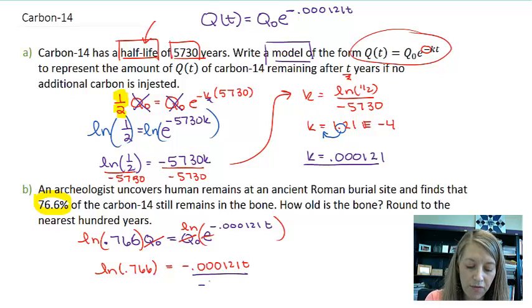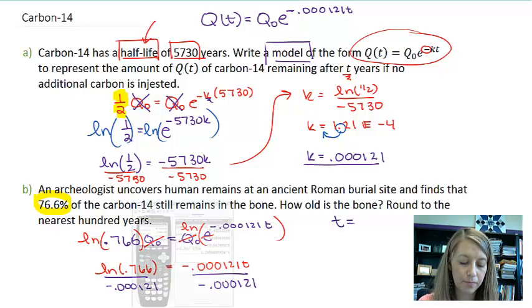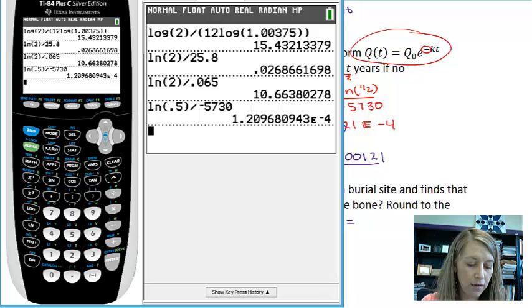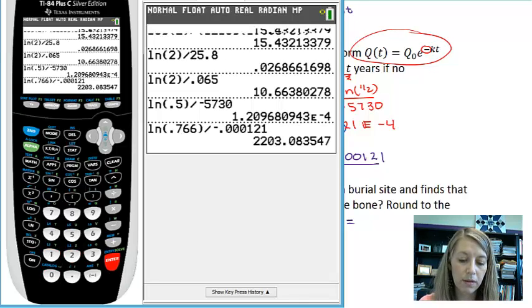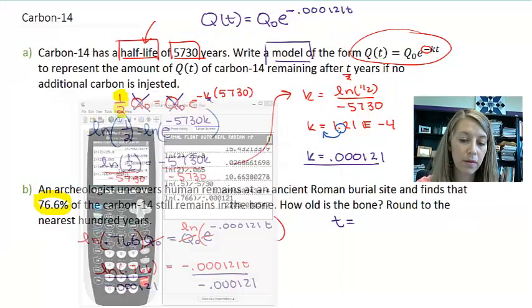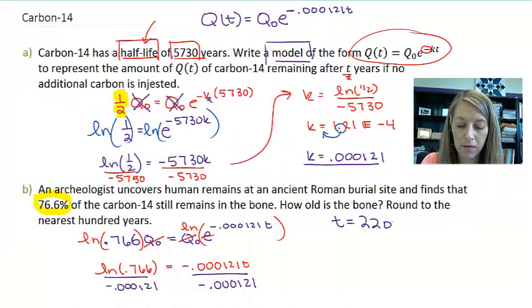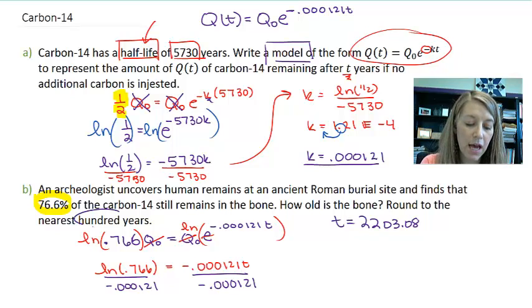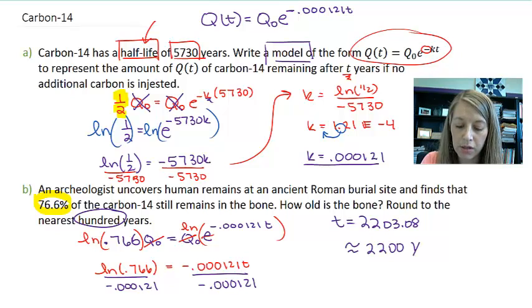To get t by itself, I just divide by this number there. And then I just need to type that in my calculator. So natural log of .766 divided by negative .000121. And so that tells me t is approximately 2203.0808. Or if I round it to the nearest hundred years, that is approximately 2200 years.